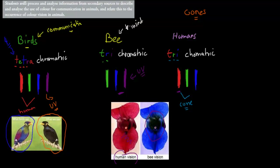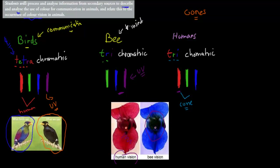The reason I'm mentioning this is because the syllabus point says students will process and analyze information from secondary sources to describe and analyze the use of color for communication in animals, and relate this to the occurrence of color vision in animals. I've done the first part — I've told you that most animals see in color, and they have different types of color vision depending on the animal, because these visions play different roles in their lives.